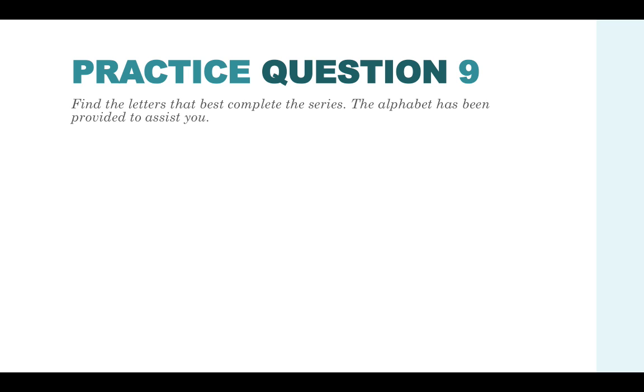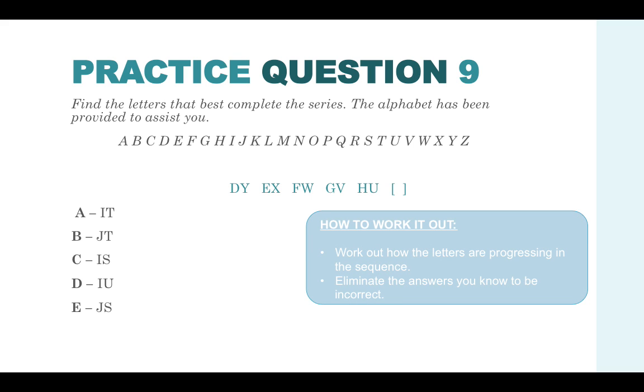Practice question nine. Find the letters that best completes the series. The alphabet has been provided to assist you. Here's the alphabet for you. And we've got a lettered sequence. We've got D, Y, E, X, F, W, G, V, H, U. And then you're working out what the answer comes next.